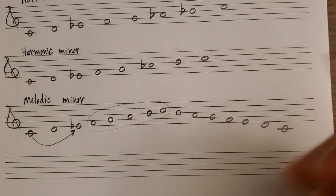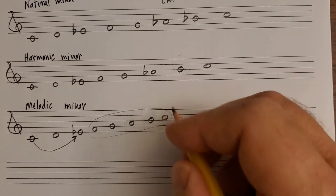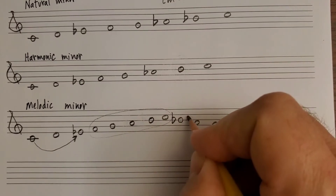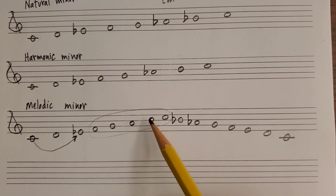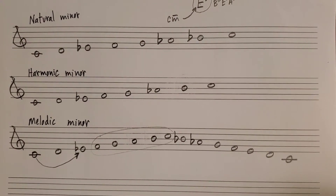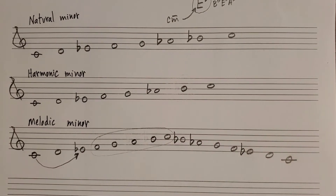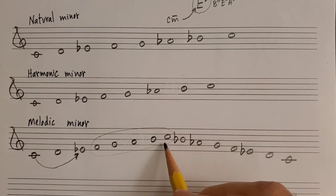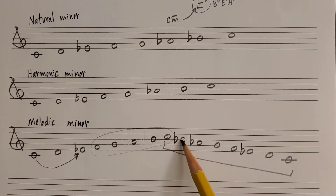On the way down, you're going to restore scale degrees seven and six to what they initially were in natural minor. So the B becomes a B flat and the A goes back to an A flat. On the ascending form you raise scale degrees six and seven; on the descending form you lower them back to what they originally were from natural minor. It's also convention to write in any other accidentals on scale degrees five, four, three, two, and one on the way down — so I'll write the E flat again. On the way down it looks and sounds like simply natural minor.